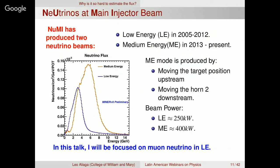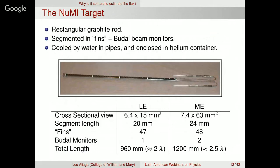NUMI has been running since 2005. From 2005 to 2012, it ran in low-energy mode producing a muon neutrino flux spectrum with a peak around 3 GeV — shown as the blue line. This talk focuses on muon neutrino in low-energy mode for a clearer explanation. The NUMI target is a rectangular segmented graphite rod, about two interaction lengths long, less than one meter in the low-energy era.